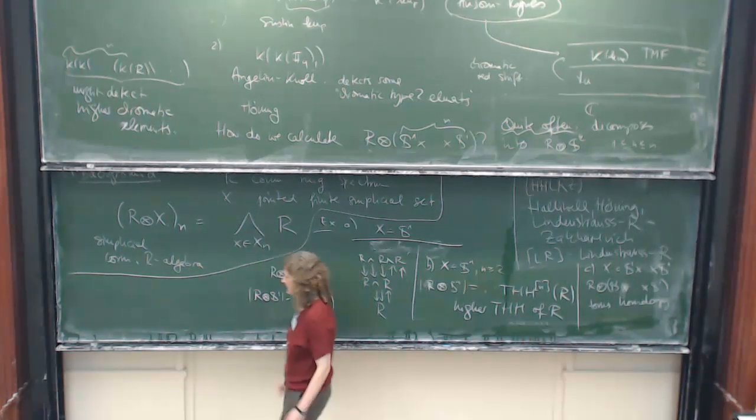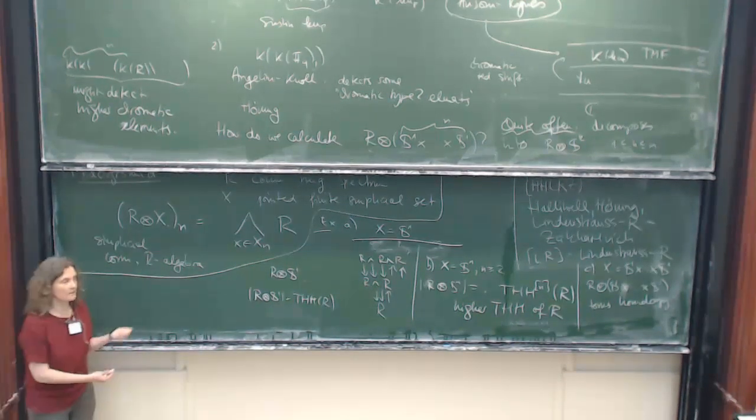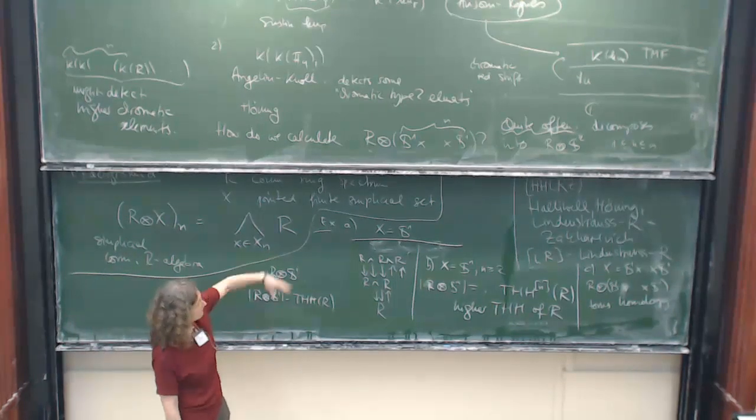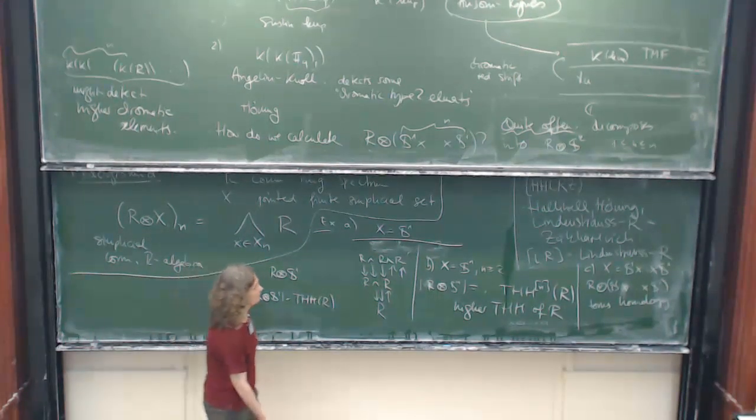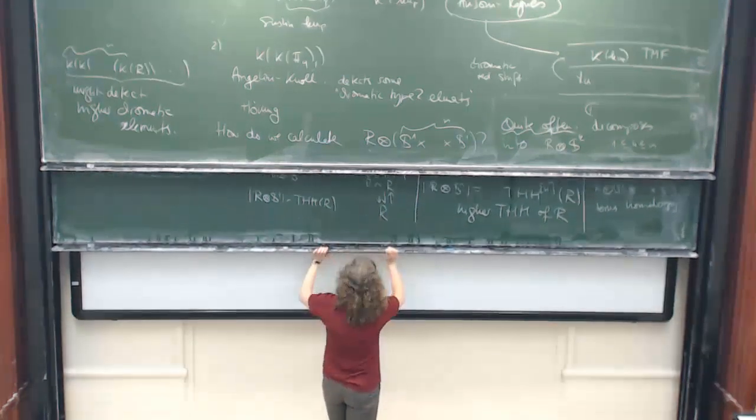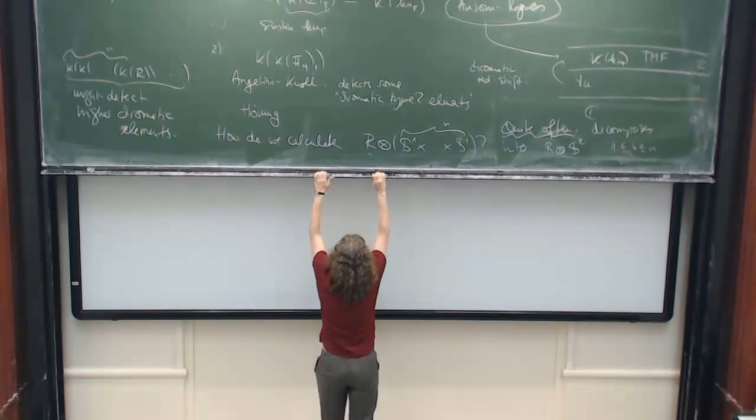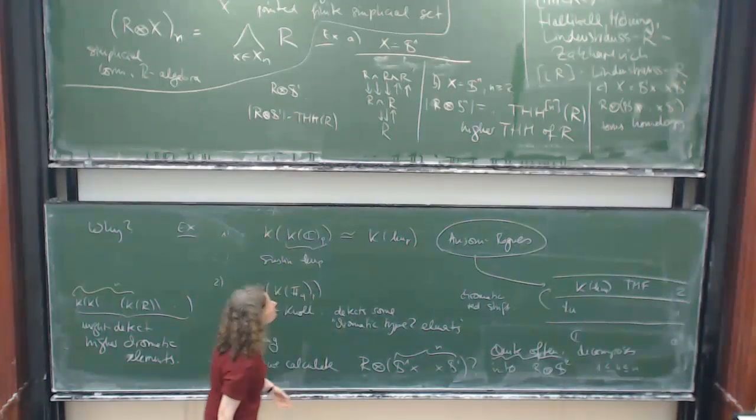So if all this says we are smashing over the sphere spectrum, you can also vary the ground ring. And if you vary it to R over an Eilenberg-MacLane spectrum, you get just higher variants of Hochschild homology. And then the motivating example, of course. So let's take this to be a torus. Then you get R tensor this torus. So there you get torus homology. So if I place a star somewhere, I mean the homotopy groups of these spectra, and they hopefully give us some information about K-theory eventually.